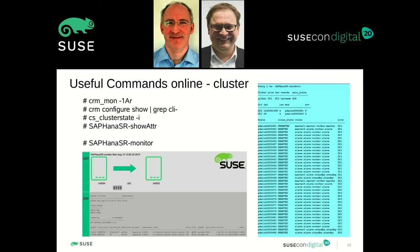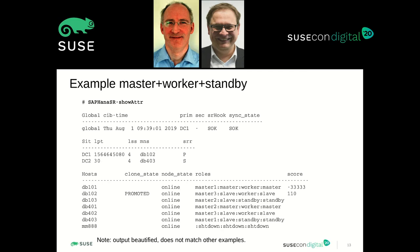Once you have set up the cluster and put HANA under cluster control, you have the usual cluster commands: crm mon, crm configure show. The cs-cluster-state is part of the cluster tools package. These three commands are always the first choice to check if the cluster is healthy. If you want to do something with the cluster, you should run these three commands first to check if it's ready. And in this case with the HANA cluster, you have SAPHanaSR show attribute to show how the cluster sees HANA. Everything should be fine before you start something with the cluster.